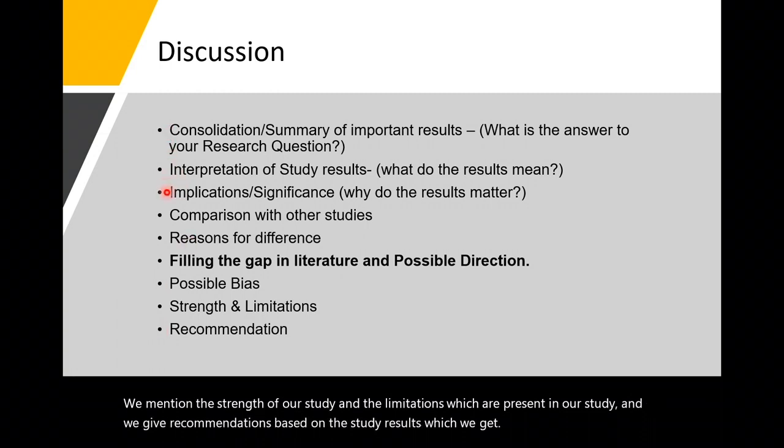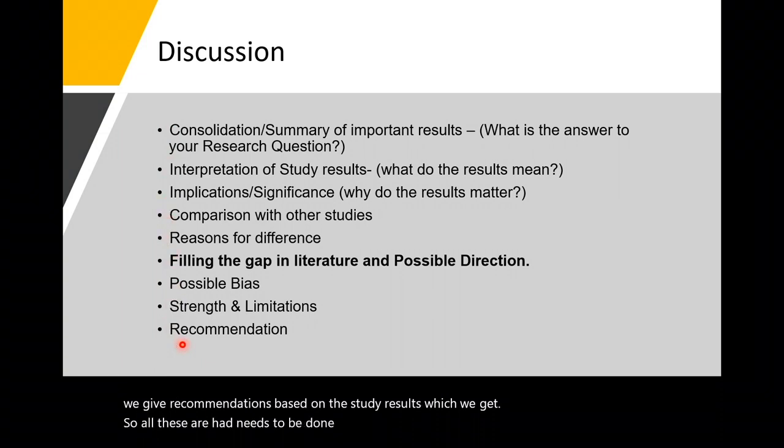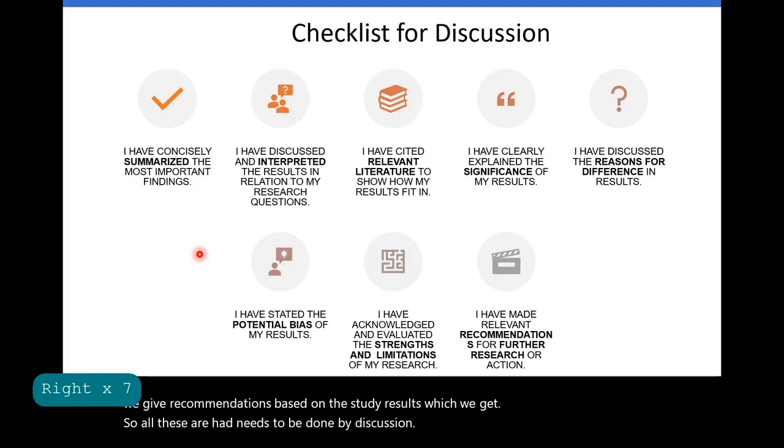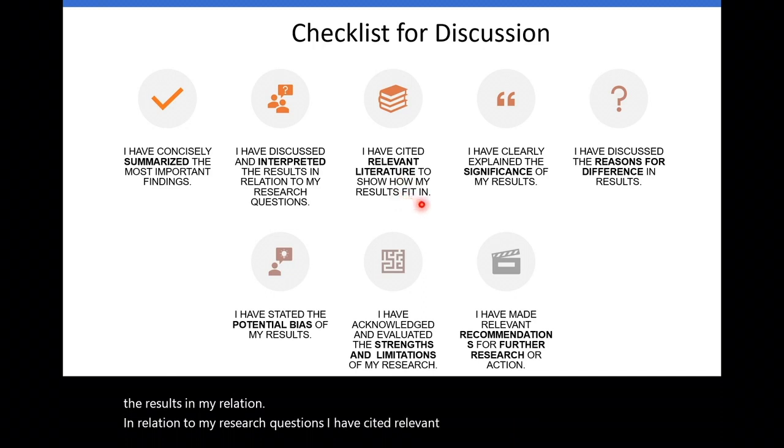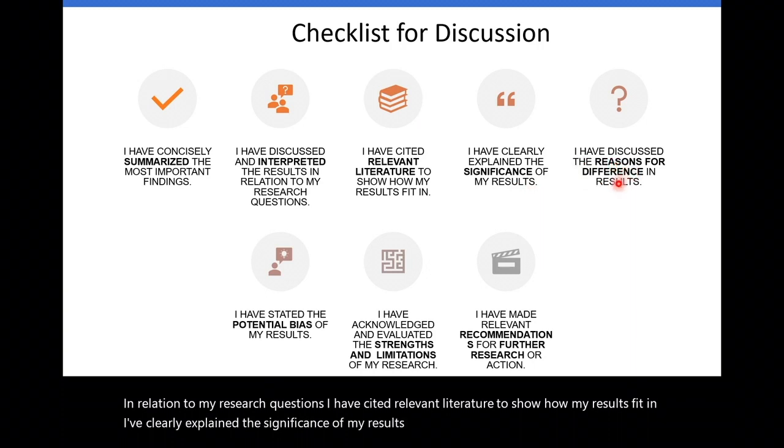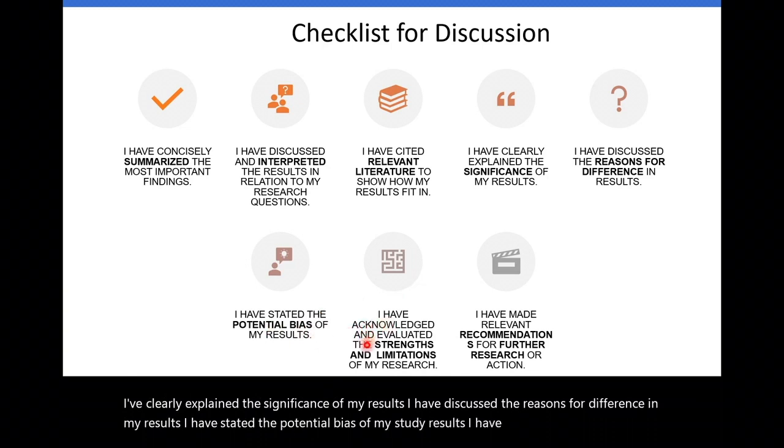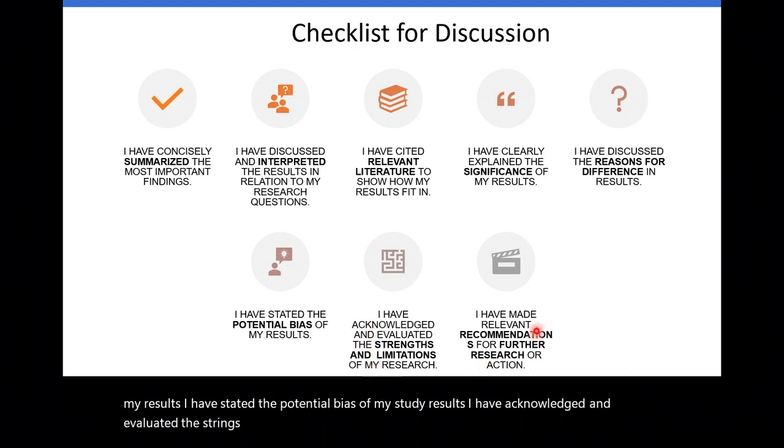So all these need to be done in discussion. Here is the checklist for the discussion. First, I have concisely summarized the most important findings. I have discussed and interpreted the results in relation to my research questions. I have cited relevant literature to show how my results fit in. I have clearly explained the significance of my results. I have discussed the reasons for difference in my results. I have stated the potential bias of my study results. I have acknowledged and evaluated the strengths and limitations of my research. I have made relevant recommendations for further research or action.